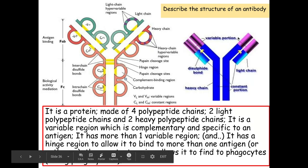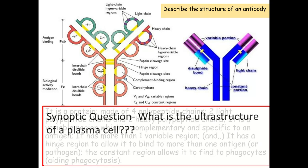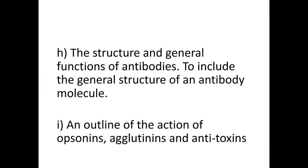Just to draw your attention one more time to the variable regions: make sure that you're saying they're complementary and specific to the antigen, not the pathogen, otherwise you won't get the marks. What's quite popular here are synoptic questions linking into the ultrastructure of the plasma cell. Don't forget the plasma cell is the one that makes the antibodies, so what organelles must be present within the plasma cells to make those proteins? Go back and have a look at ultrastructure and organelles if needed.